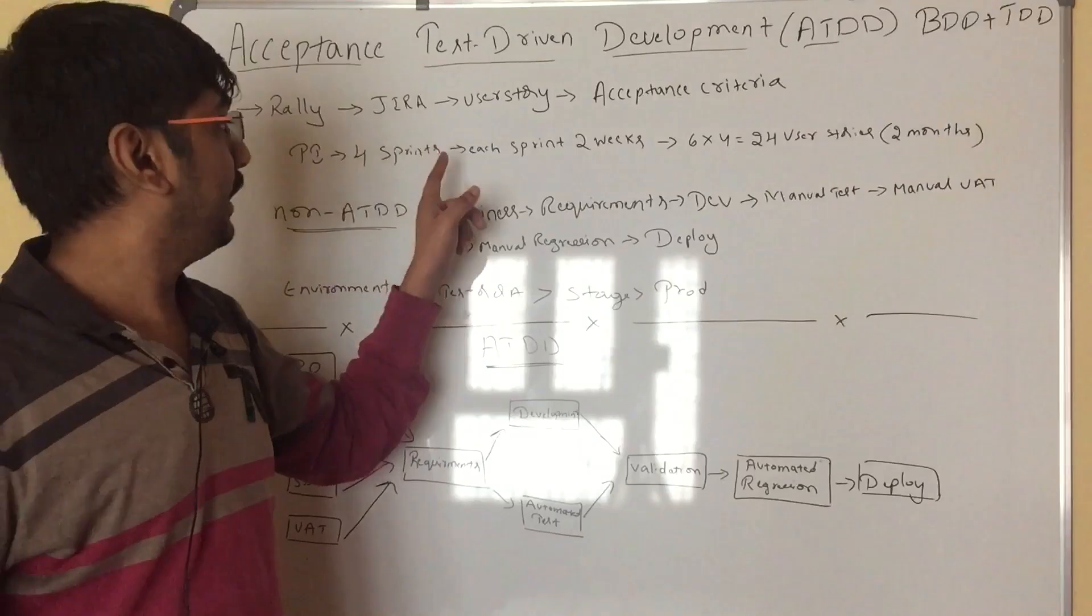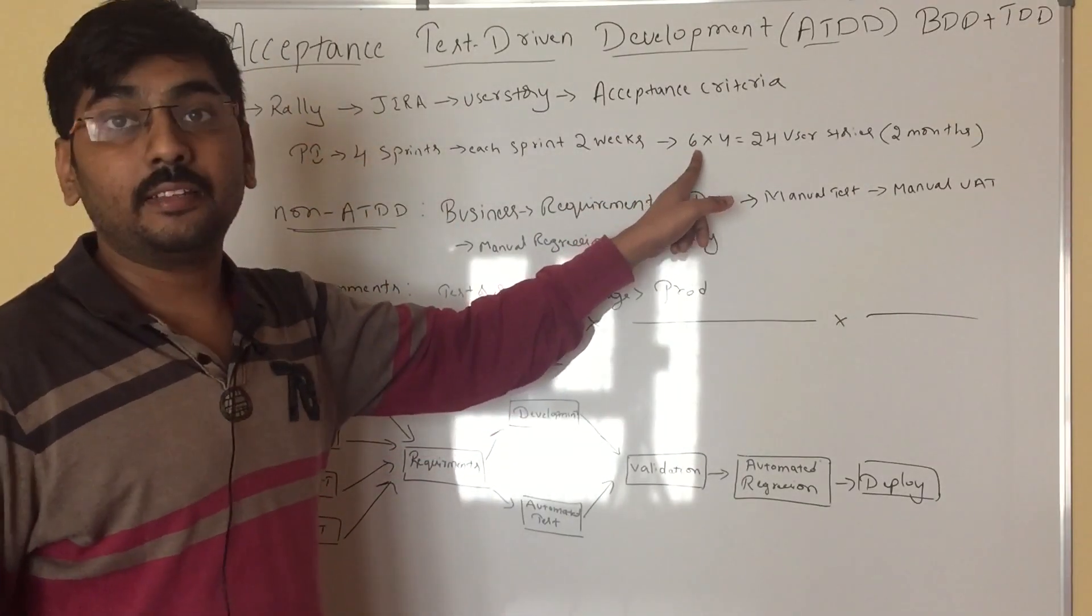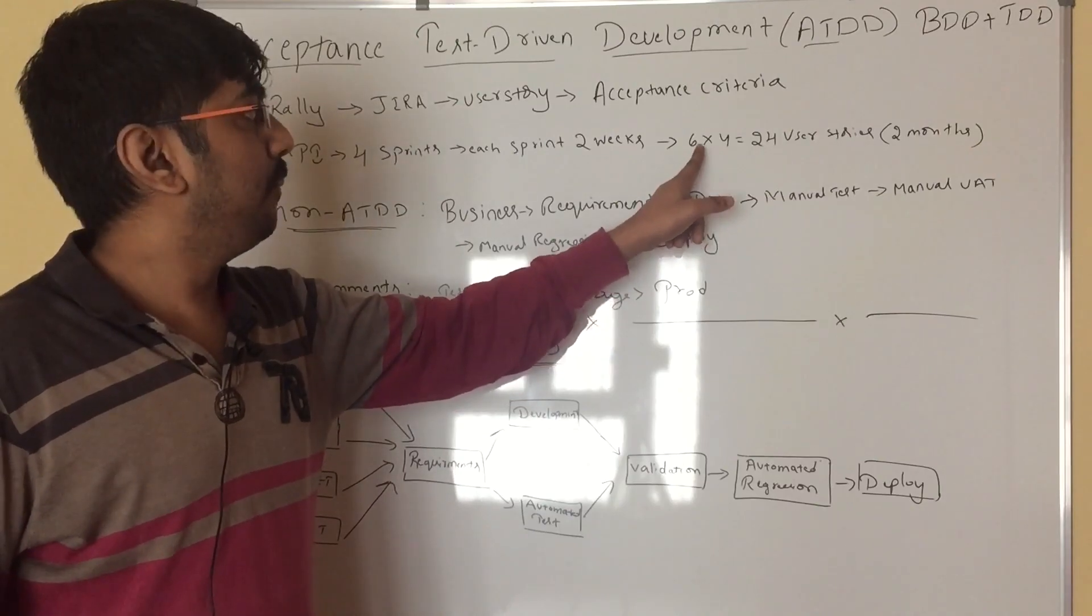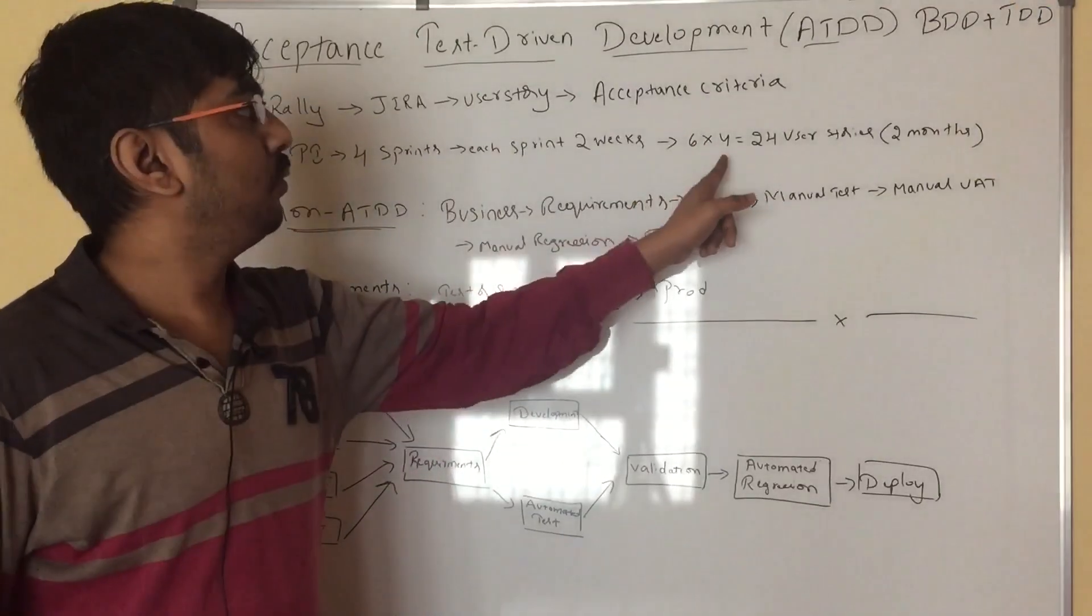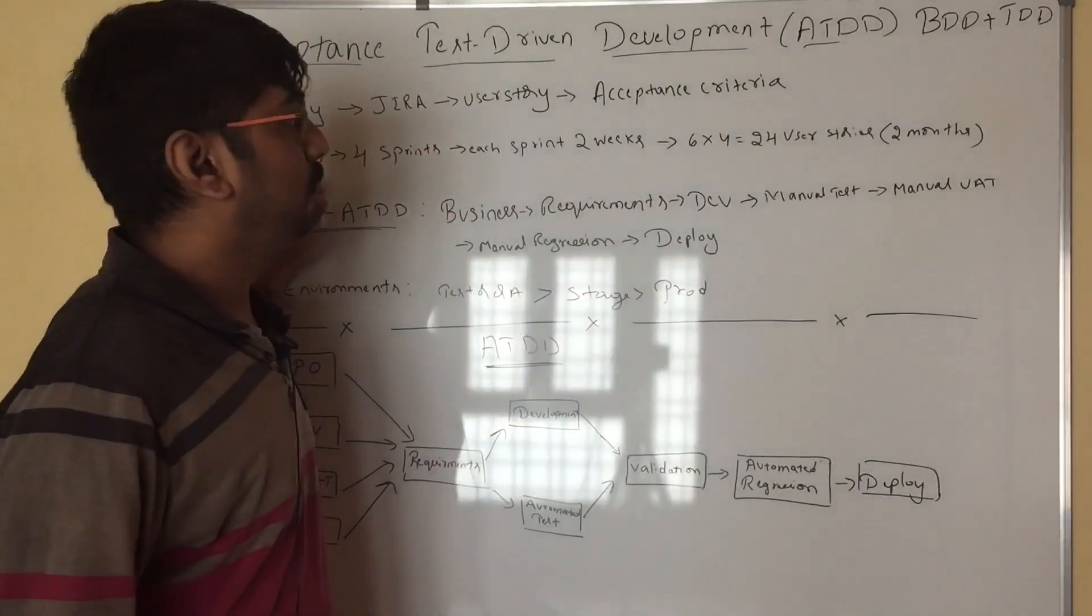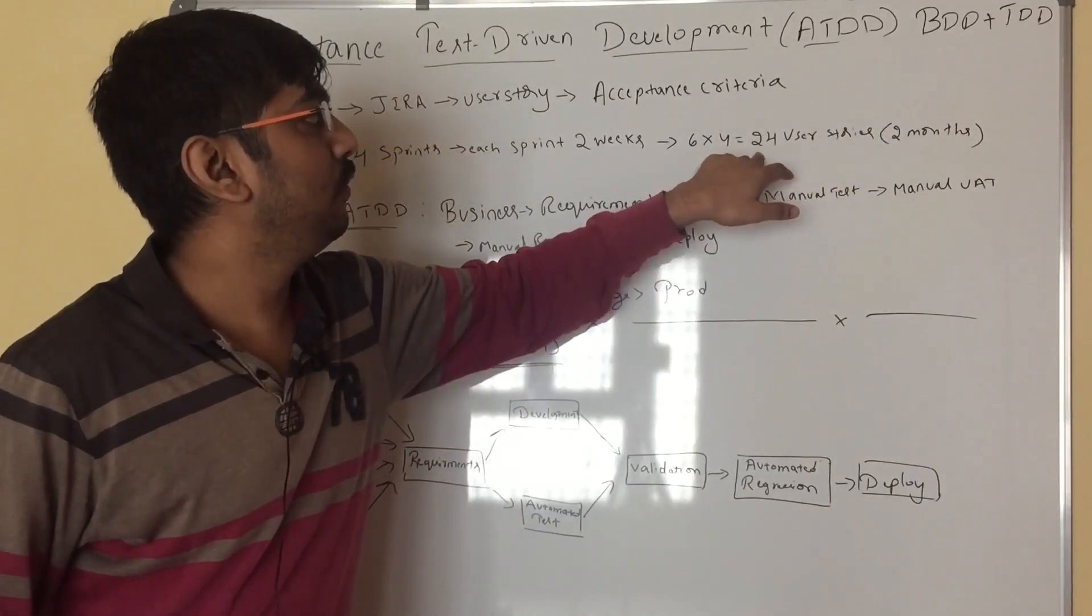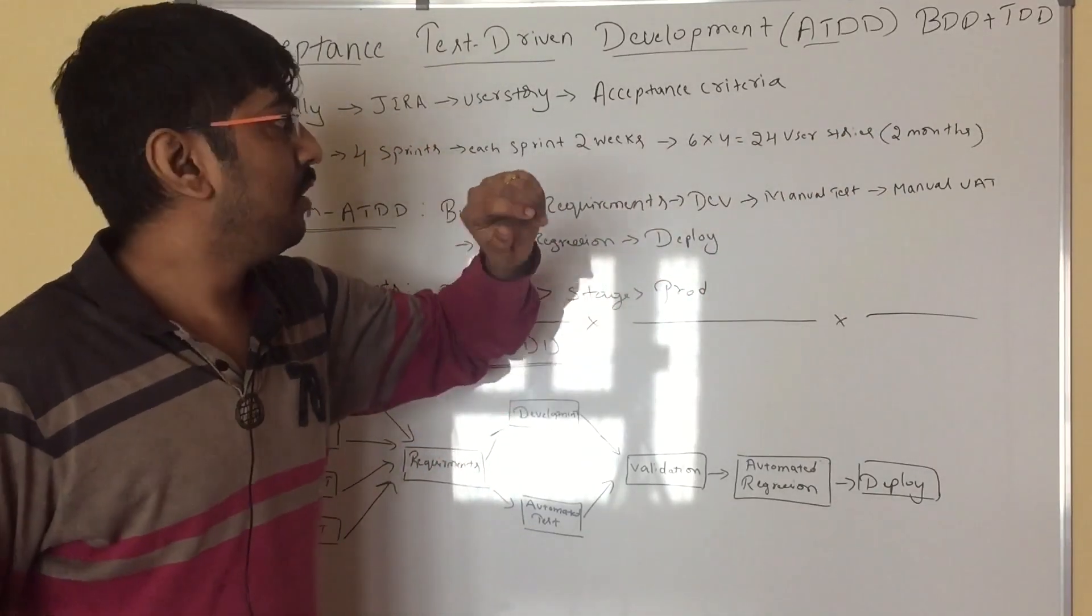Each sprint will be two weeks. Let's say in each sprint I am taking six user stories. In four sprints, around 24 user stories. It is a one month release, this PI is a one month release. Within two months, I am going to be using 24 user stories.